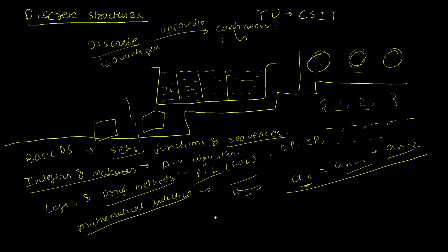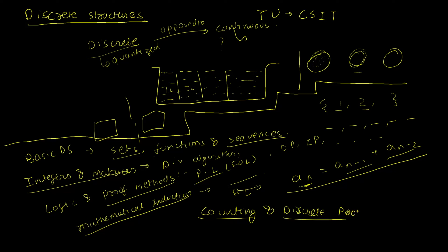Next is counting and discrete probability. This covers the principle of counting, different counting rules, sequences, the Binomial Theorem, Pascal's Triangle, and everything related to counting and distribution. We'll only be looking at discrete probability distributions — structures of probability that are discrete in nature.